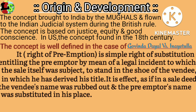The right of preemption was brought to the Indian mainland by the Mughals. Thereafter, it ran down to the Indian judiciary in the British era. The basis of preemption in the Indian courts was based on equity, justice and good conscience. In the 18th century, the mark of preemption was found in the American judicial system.